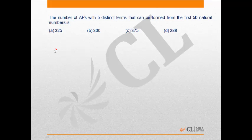Now if the common difference is 1, then the first term can be anything from 1 to 46, because if the first term is 46 then the terms of the AP would be 46, 47, 48, 49 and 50.